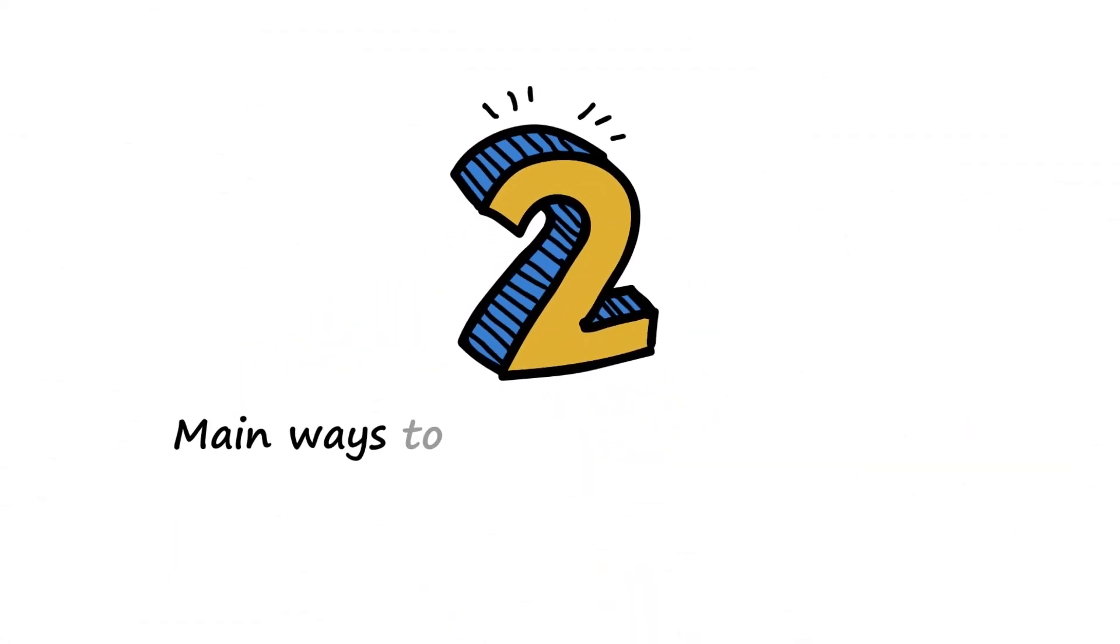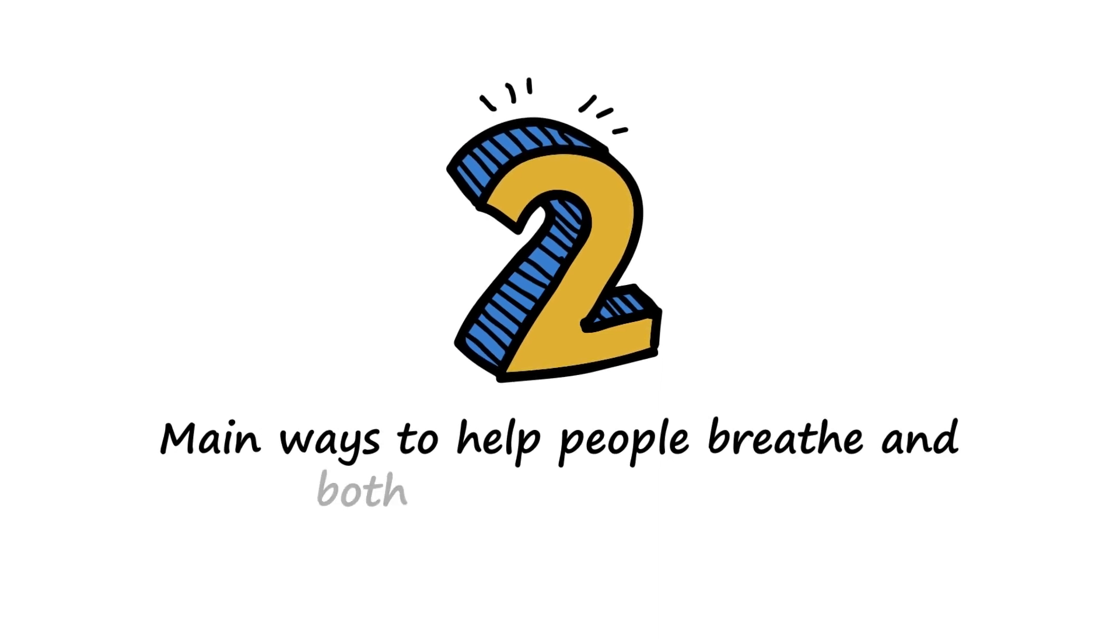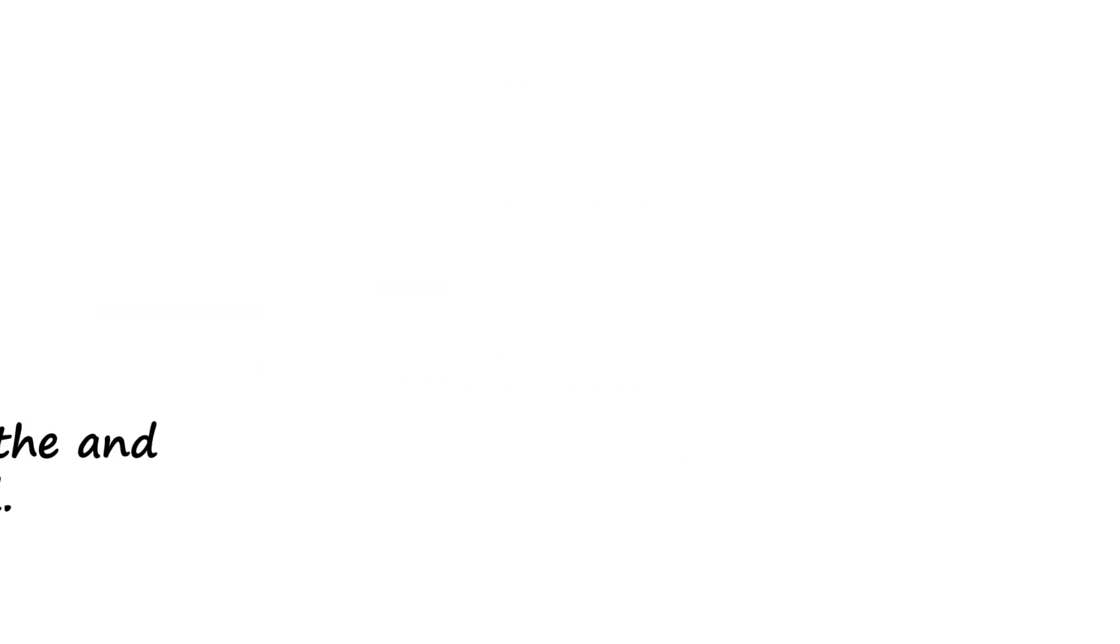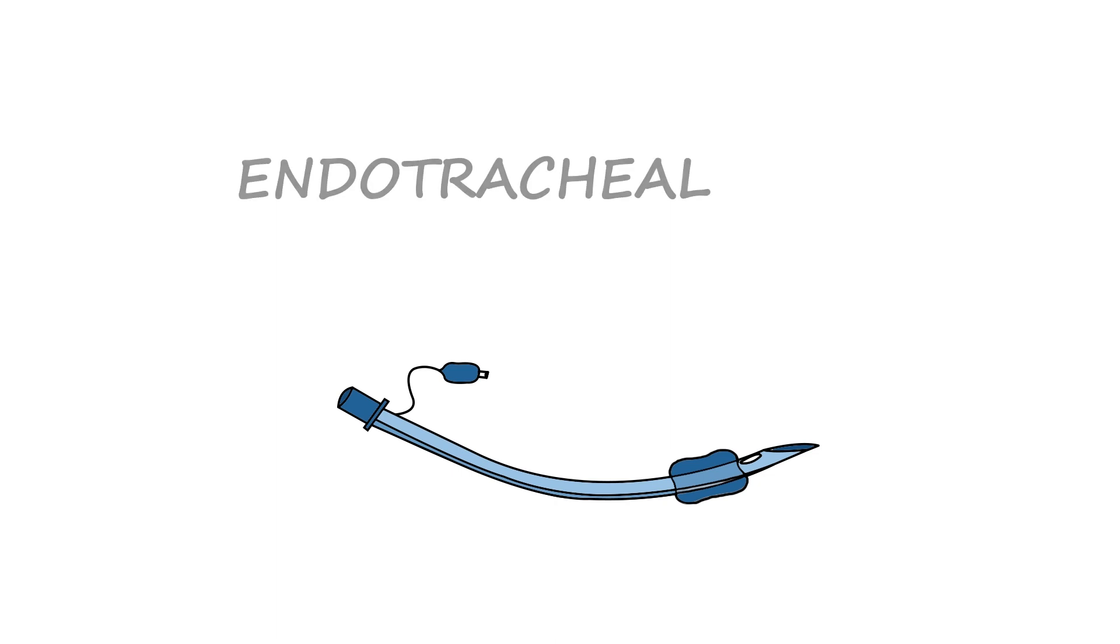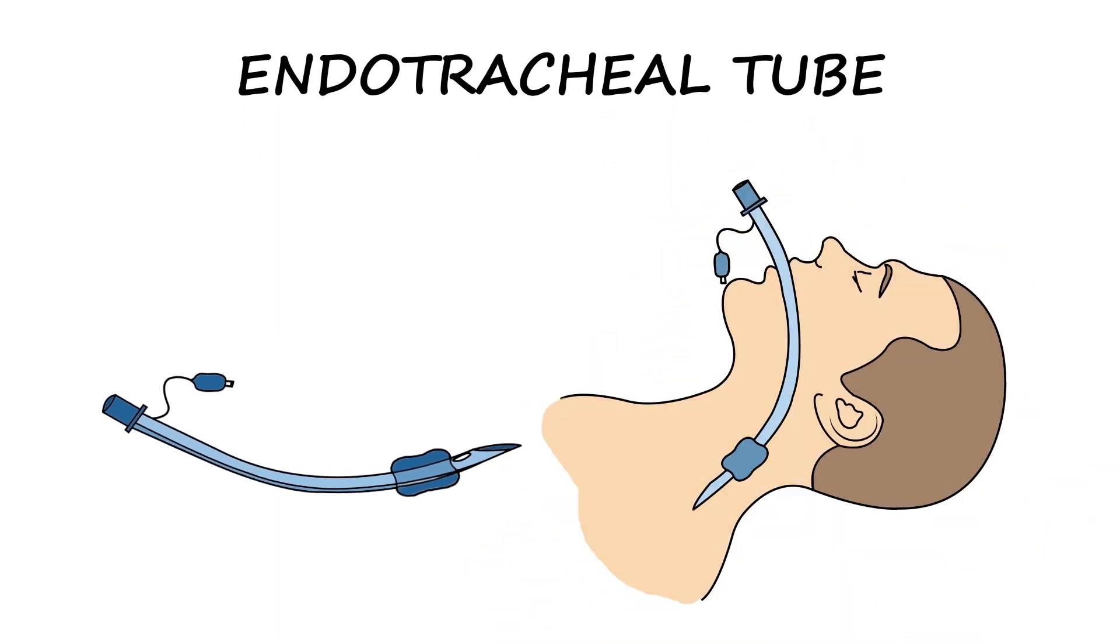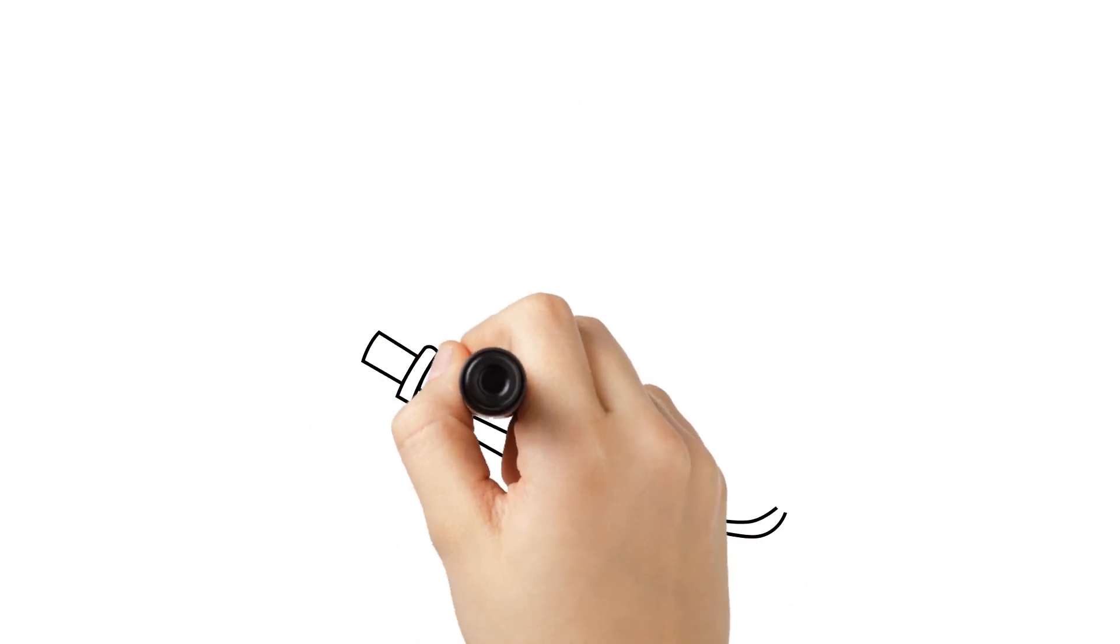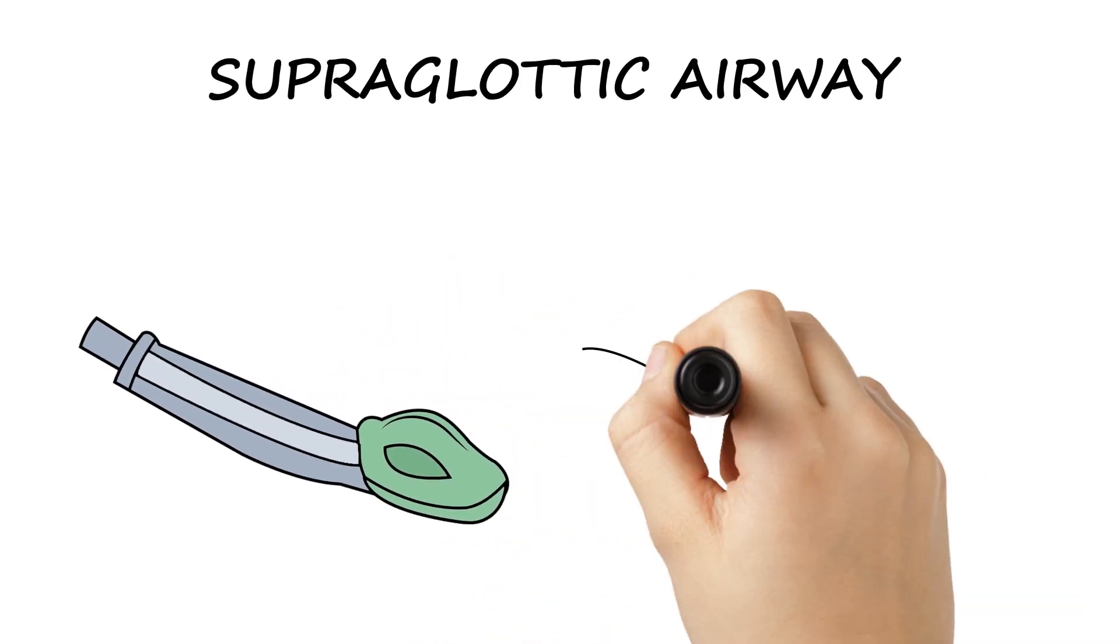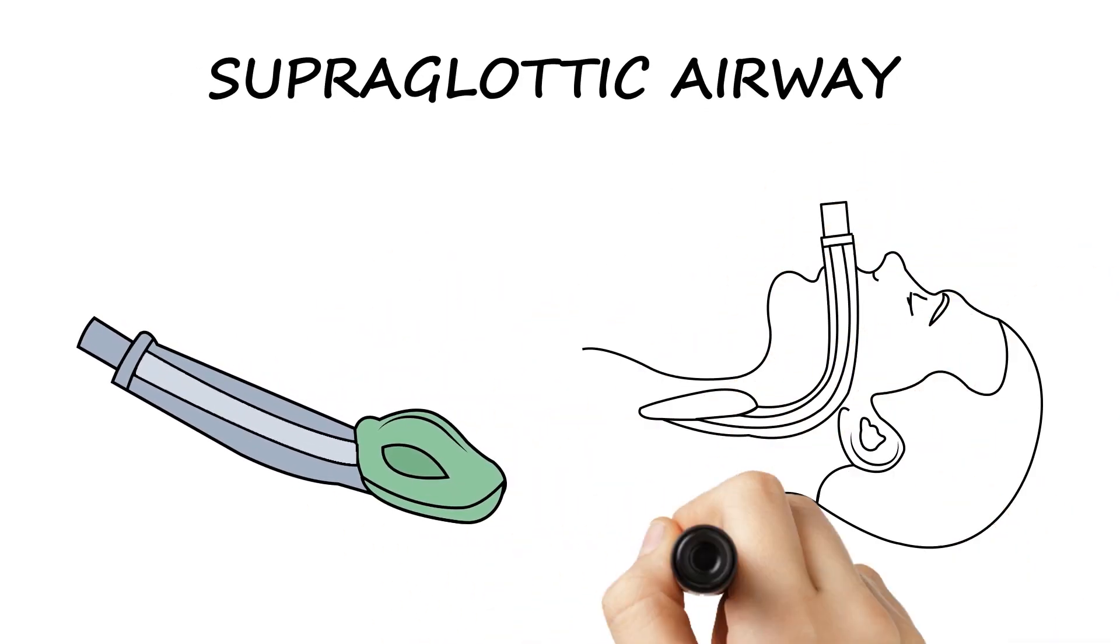There are two main ways to help people breathe, and both are currently used. One method uses an endotracheal tube, which is a tube that goes directly into the trachea. Another uses a supraglottic airway, which is a tube that sits above the trachea.